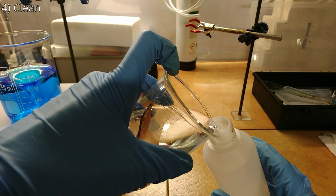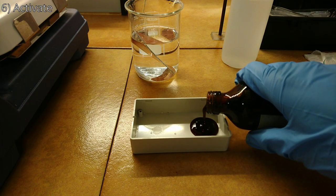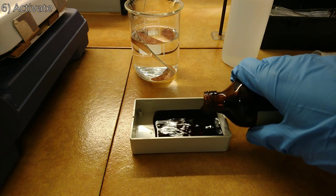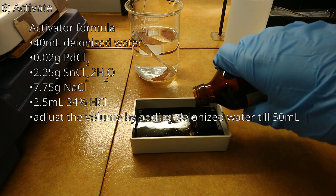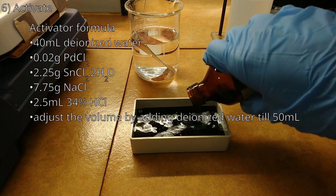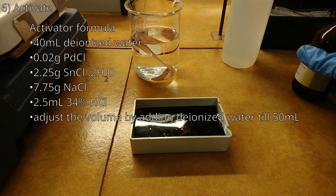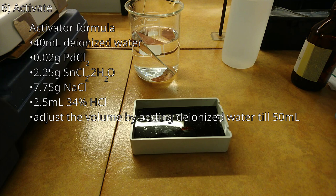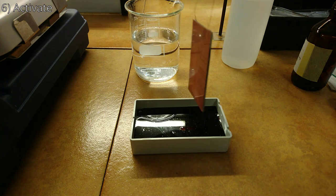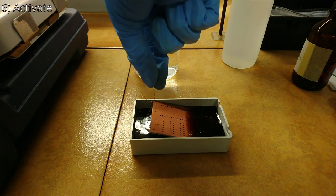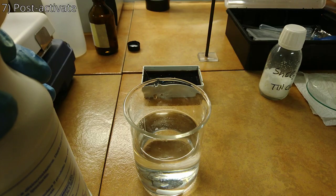Step 6 requires the palladium chloride activator. Unfortunately I do not have the video for the preparation of this solution but the formula is as follows. Start with 40 ml of deionized water in a beaker. Add 20 mg of palladium chloride. Then add 2.25 g of stannous chloride dihydrate. Then add 7.75 g of sodium chloride. Add 2.5 ml of 34% hydrochloric acid. And finally add deionized water till a total volume of 50 ml is reached. Remember to stir the solution after each addition. This solution should be stored in a well-closed container. It should last several months to one year and can be reused multiple times.